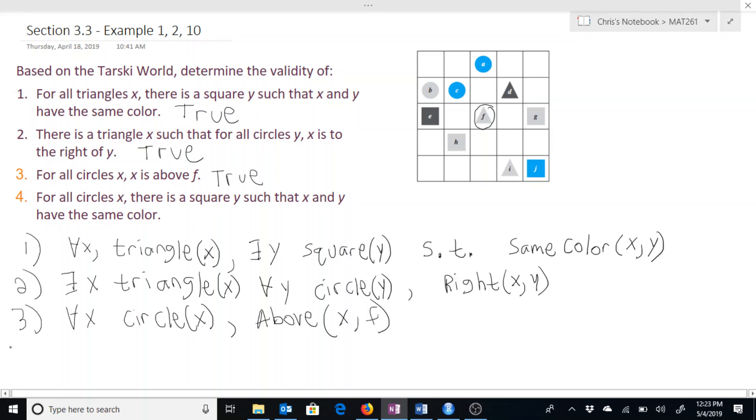And then for the fourth one, we have: for all circles x there is a square y such that x and y have the same color. Just as before, we have two blue circles which match with this one blue square, and we have one gray circle that matches with two gray squares. So this one's also true.